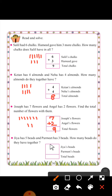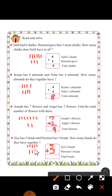Jiya has five beads and Permit has three beads. How many beads do they have together? Jiya has five beads, Permit has three beads. One, two, three, four, five — one, two, three. Count all together: one, two, three, four, five, six, seven, eight. So total beads are eight.